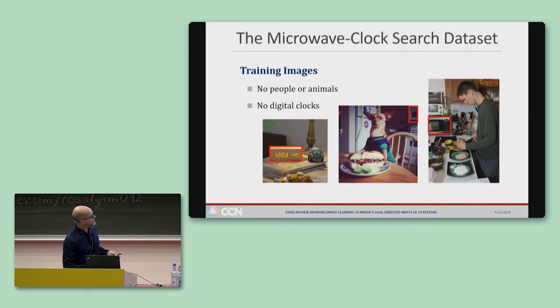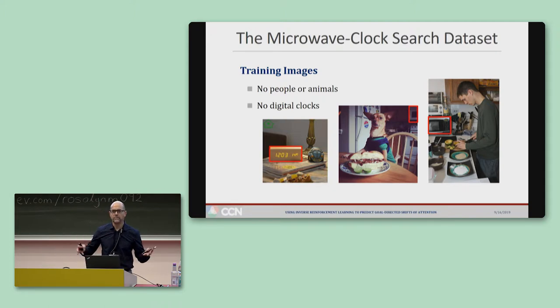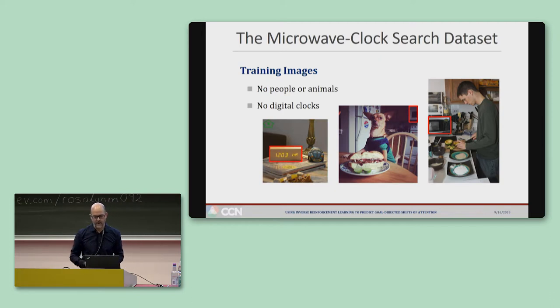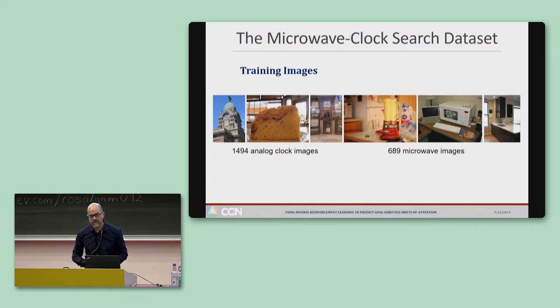We also excluded digital clocks. Again, this was a judgment call, but the features of digital and analog clocks were just too different to lump into the same clock category, so we decided to go with just the analog clocks. This left us with about 1,500 clock images and 689 microwave images, all to use for training.